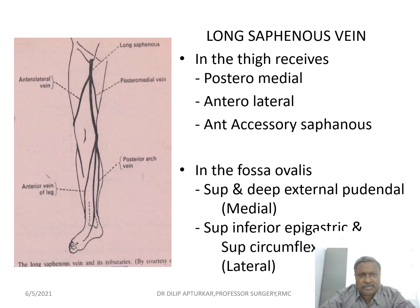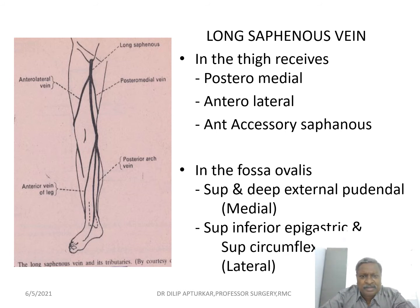This picture shows the tributaries of the long saphenous vein. In the thigh, it receives the posterior medial, anterolateral, and anterior accessory saphenous veins. In the fossa ovalis, the saphenous vein pierces the cribriform fascia to join the femoral vein. Other tributaries include the superficial and deep external pudendal, superficial inferior epigastric, and superficial circumflex iliac veins laterally.